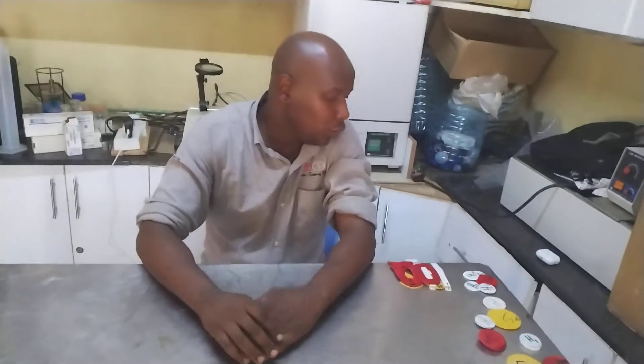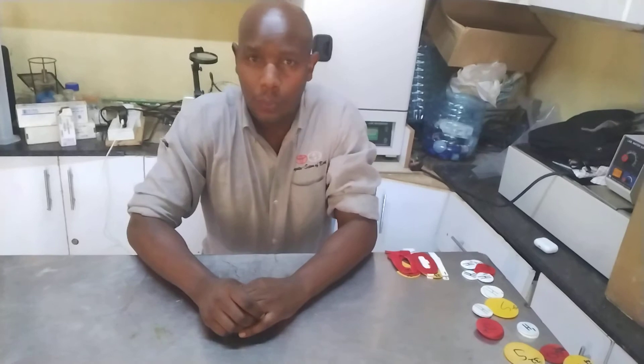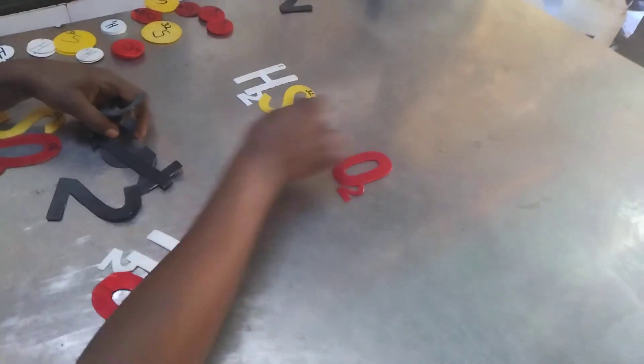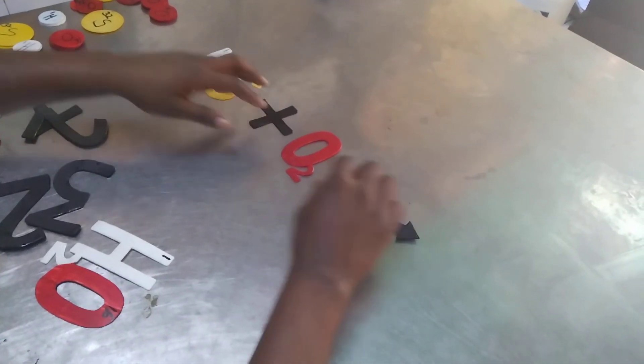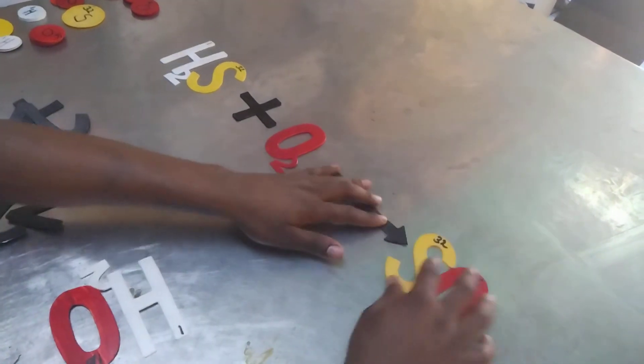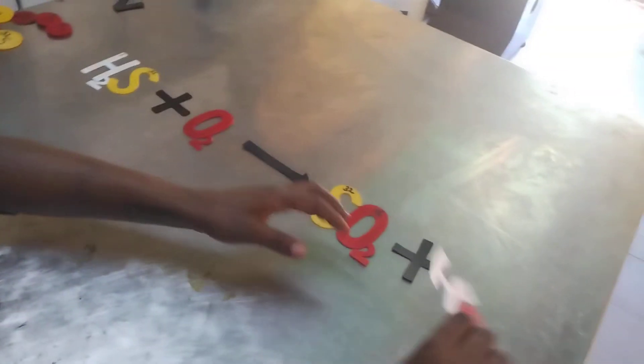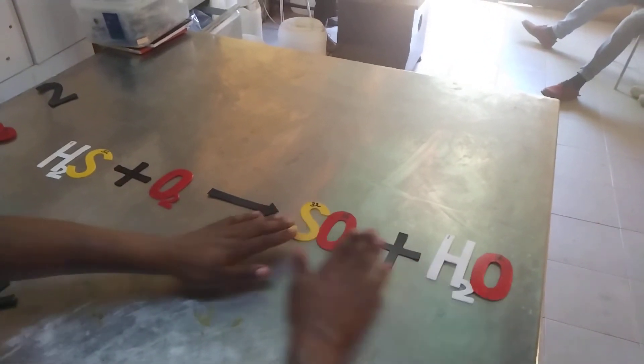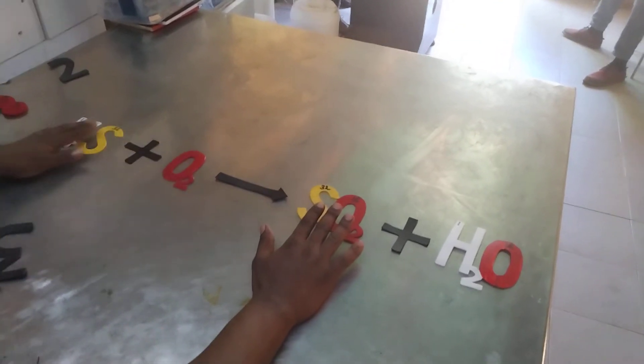Welcome to another video on balancing of chemical equations. Today we are going to balance an equation for the reaction between hydrogen sulfide gas and oxygen gas to produce sulfur dioxide and water. These are the models for water, sulfur dioxide, oxygen, and hydrogen sulfide.